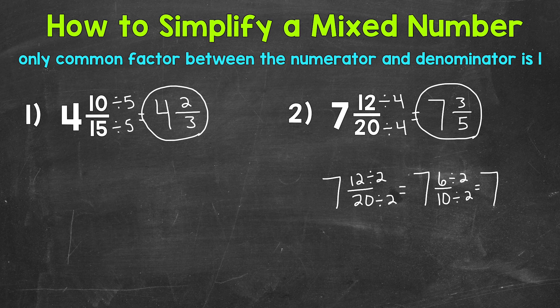So we can divide by 2 again. We end up with 7 and 6 divided by 2 is 3. 10 divided by 2 is 5. The only common factor between 3 and 5 is 1. So we are in simplest form. 7 and 3 fifths. So two different paths there, but the same exact answer. Both are correct.